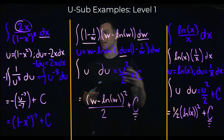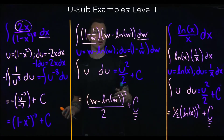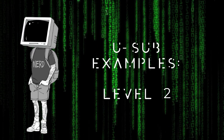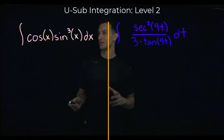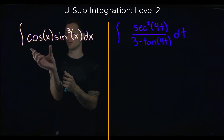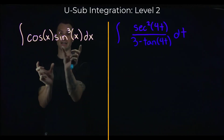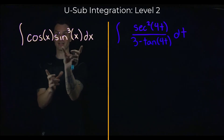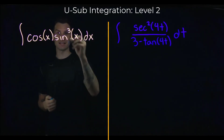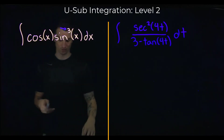Hopefully those three examples helped. The problems will get increasingly harder in the following parts. Let's jump into level 2. Both are still u-substitution problems. For the first one, notice: the derivative of cosine gives negative sine, and the derivative of sine gives cosine. It almost appears we can do either, but the sine cubed is the issue — the exponent of 3 is the problem.